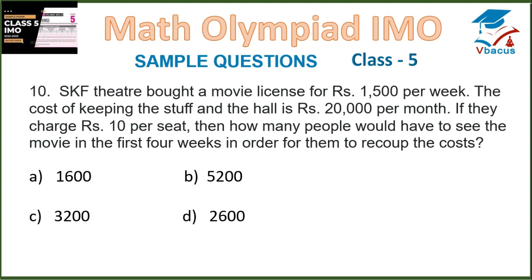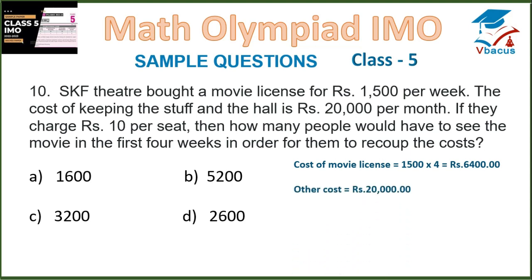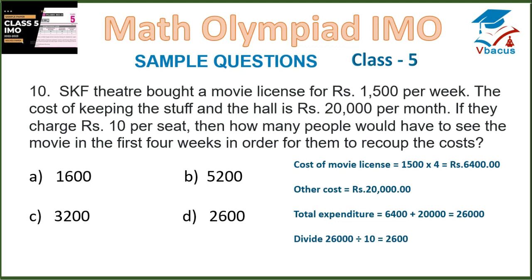Question 10: SKF theatre bought a movie license for Rs. 1500 per week. The cost of keeping the staff and the hall is Rs. 20,000 per month. If they charge Rs. 10 per seat, how many people would have to see the movie in the first 4 weeks to recoup the cost? Cost of movie license is Rs. 1500 times 4, that is Rs. 6000. Other cost is Rs. 20,000. Total expenditure is Rs. 26,000. Dividing 26,000 by 10, we get 2600. So, 2600 people would have to see the movie in the first 4 weeks to recoup the cost, which is in option D.